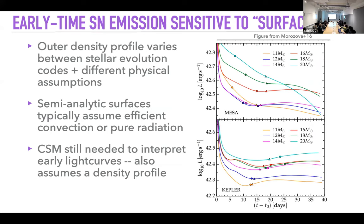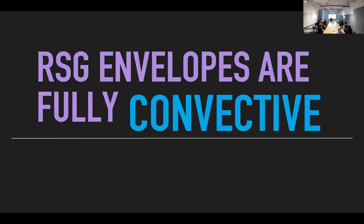When you explode Kepler models versus MESA models you get morphologically different early light curves. These are spherical cows, so it's useful to ask: what do we expect the surfaces of these stars to look like in a more 3D way? The envelopes of red supergiant stars — in which these explosions happen — are fully convective, from near the core all the way out to the orbit of Jupiter.